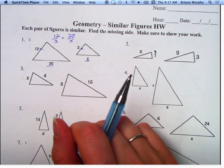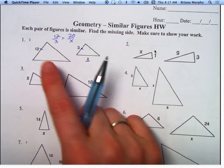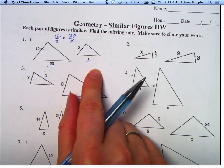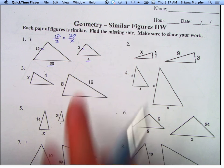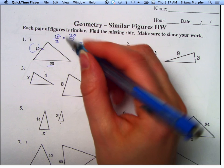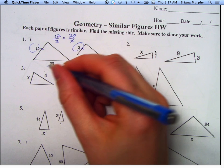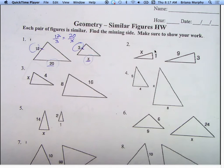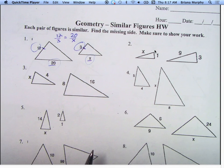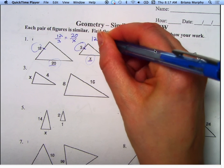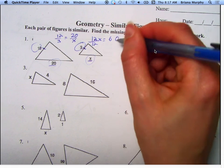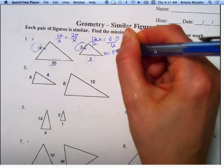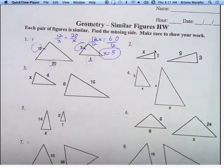I could have put 12 over X equals 3 over 20, which would have been fine, but I recommend doing it left to right so you don't get mixed up. Right, 12 equals 3, 20 equals X. No, because 3 and 12 equal each other, so they're across. And 20 and X equal each other, so they're across from each other. Now I'm going to cross multiply, and I get 12X equals 60. Divide both sides by 12, X equals 5.